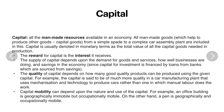The capital mobility depends on the nature and use of the capital. For example, an office building is geographically immobile but it is occupationally mobile — it cannot be moved, but it can be used for many purposes. On the other hand, a pen is both geographically and occupationally mobile.